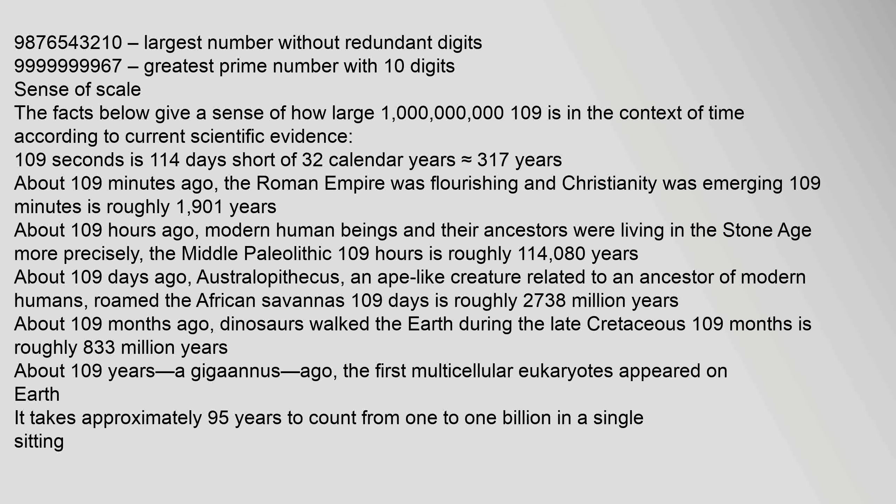Sense of scale: The facts below give a sense of how large 1 billion (10^9) is. In the context of time: 10^9 seconds is 114 days short of 32 calendar years, approximately 31.7 years. About 10^9 minutes ago, the Roman Empire was flourishing and Christianity was emerging — 10^9 minutes is roughly 1,901 years. About 10^9 hours ago, modern human beings and their ancestors were living in the Stone Age, more precisely the Middle Paleolithic — 10^9 hours is roughly 114,080 years. About 10^9 days ago, Australopithecus, an ape-like creature related to an ancestor of modern humans, roamed the African savannas — 10^9 days is roughly 2.738 million years.